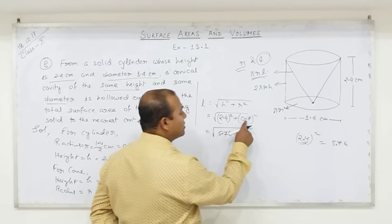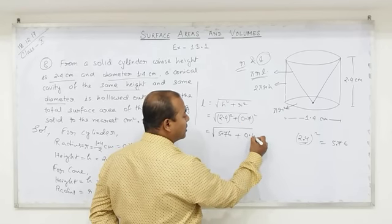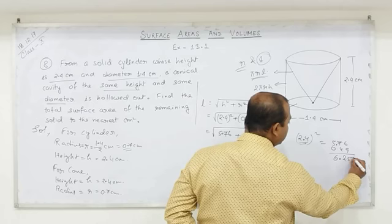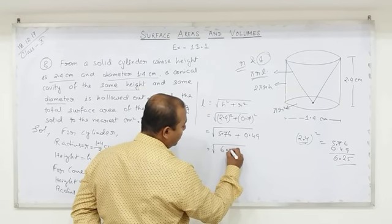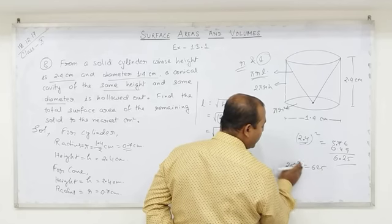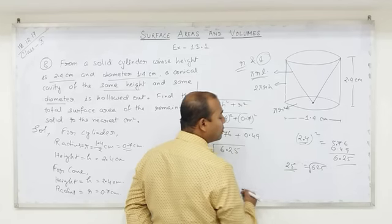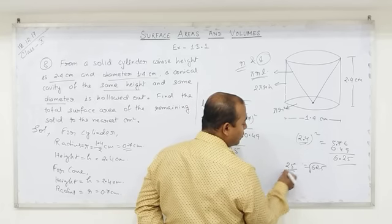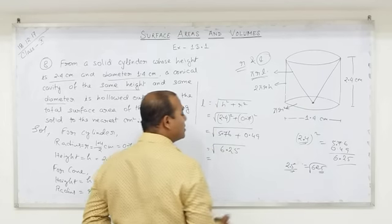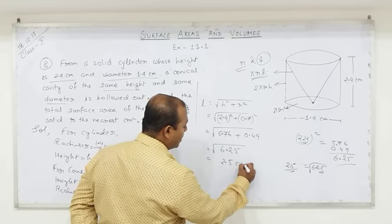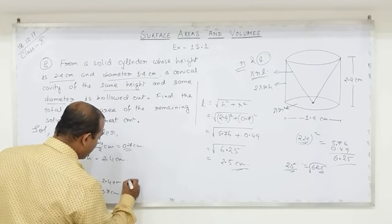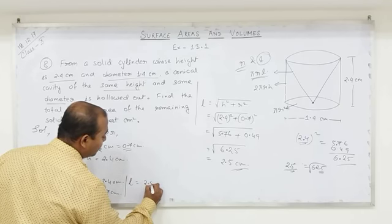0.7² = 0.49. Now 5.76 + 0.49 = 6.25. So slant height = √6.25. Since 25² = 625, and we have 2 decimal places total (one from each term), √6.25 = 2.5 centimeters. So slant height is 2.5 centimeters.